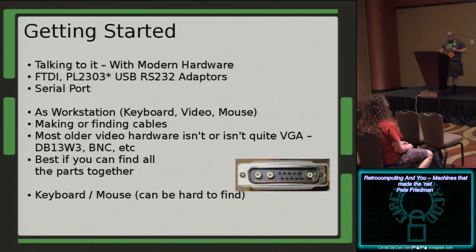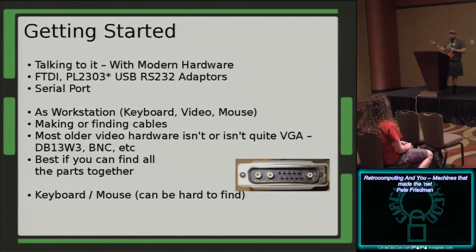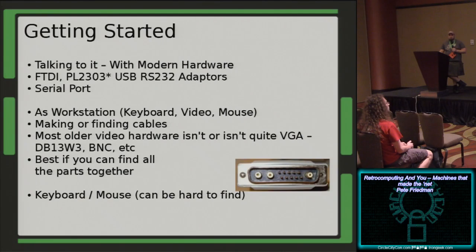One thing to keep in mind if you're just getting started: my personal recommendation is to find something and work backwards. Start with newer hardware and go backwards from there. Machines like Alphas are pretty forgiving and surprisingly easy to work with. The boot PROM is user-friendly in comparison to some other systems.